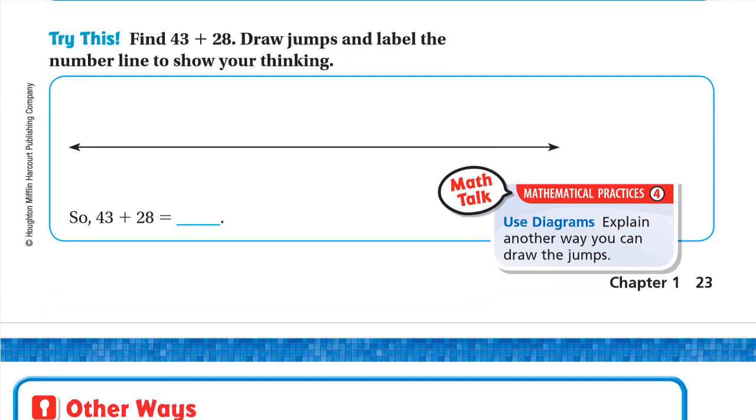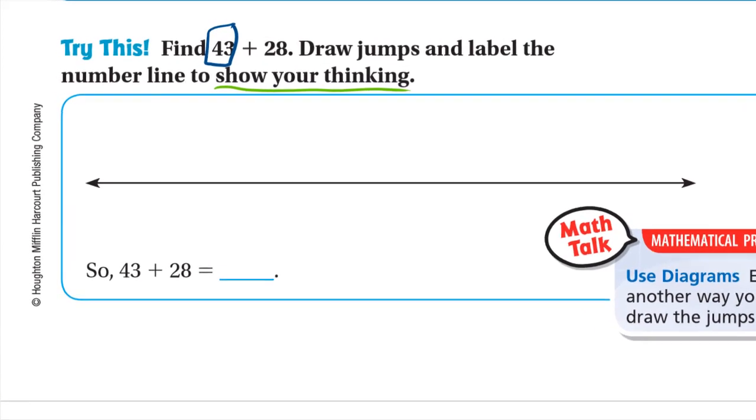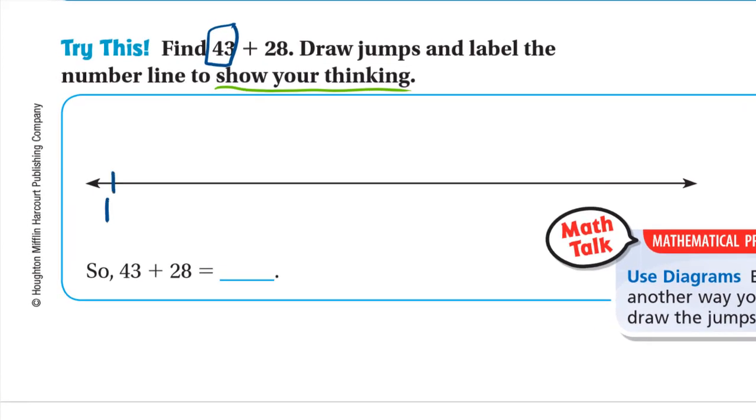Try this. Find 43 plus 28. Draw jumps and label the number line to show your thinking. So we said we will start from the bigger number which is the 43. So here we will start with the 43. And we need to add 28. So to add the 28 maybe we add 10 and 10. We add the 20. Then we add the 8 like this.